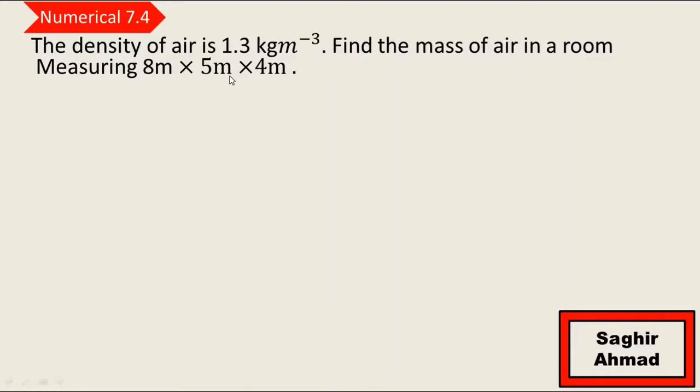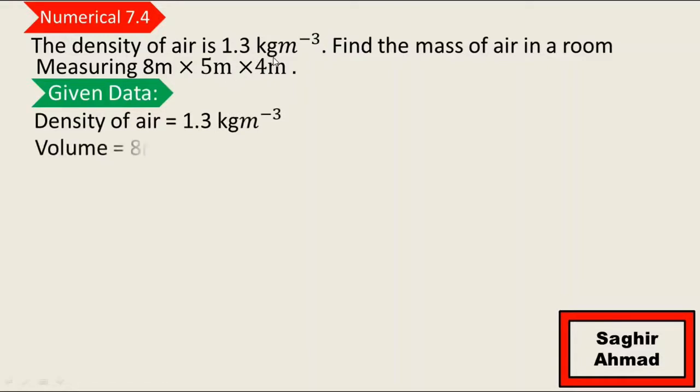So first of all we see the given data. The density of air is given, that is 1.3 kg/m³, and volume of air is given, that is 8 meters by 5 meters by 4 meters. And what we have to find here? We have to find mass of air.